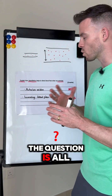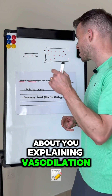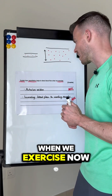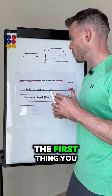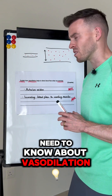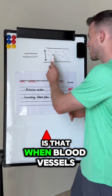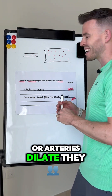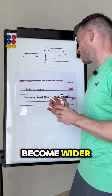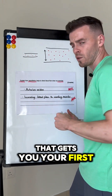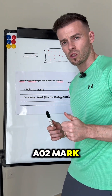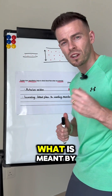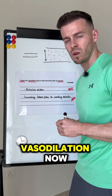The question is all about explaining vasodilation when we exercise. The first thing you need to know is that when blood vessels or arteries dilate, they become wider. That gets you your first AO2 mark because you're simply showing that you understand what is meant by the term vasodilation.